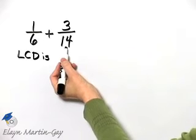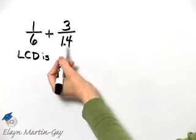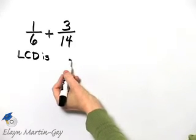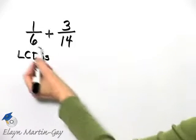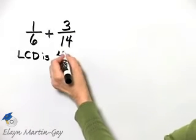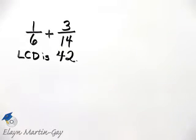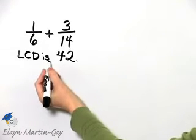So let's do 14 times 3. 14 times 3 is 42. I know 14 then divides into 42 evenly. Does 6 divide into 42 evenly? The answer is yes. So my LCD here is 42. That is one way of finding the least common denominator.